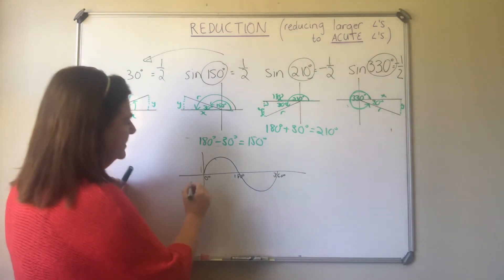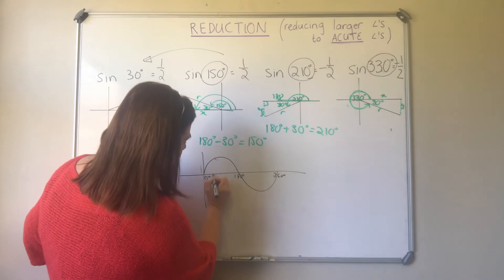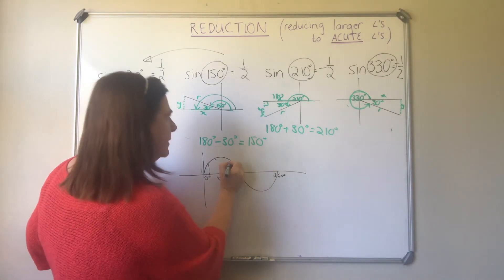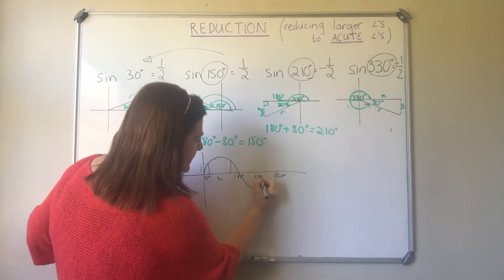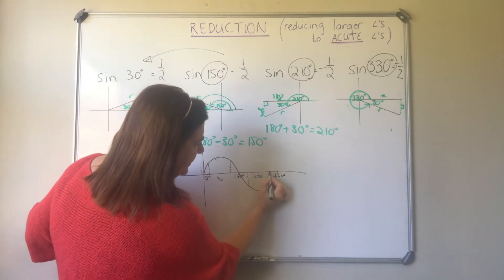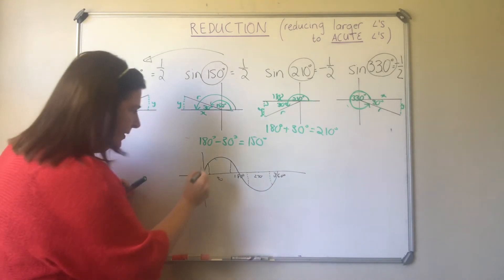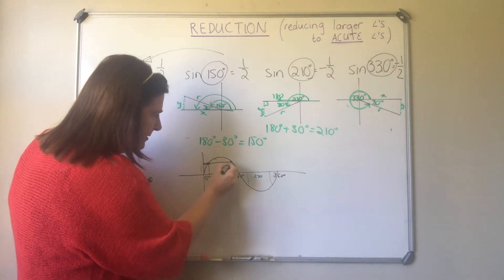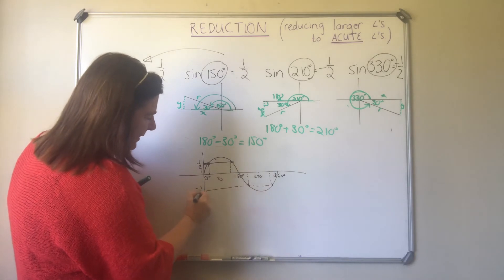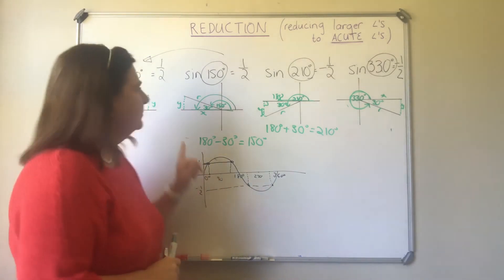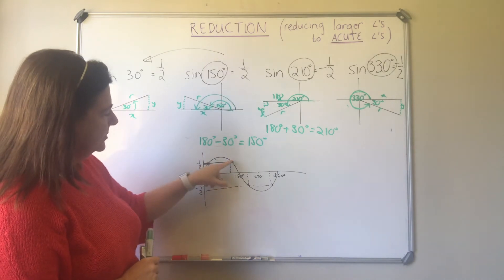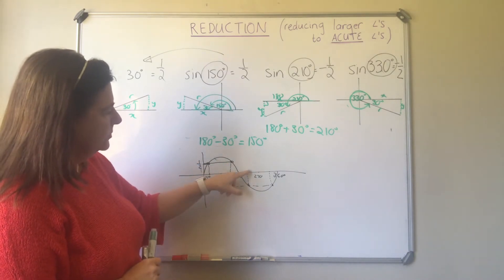On the sine graph: sine of 30° is at about that point, 150° is here, 210° is about there, and 330° is about there. At those first two points the value equals a half, and at the other two points it's minus a half. That ties in with the Cartesian plane: sine 30° is a half, sine 150° is a half, sine 210° is minus a half, sine 330° is minus a half.